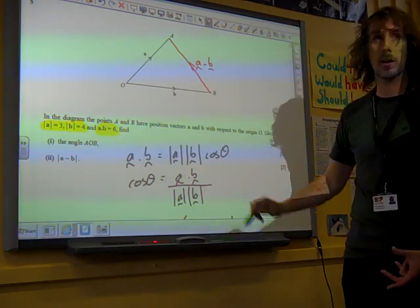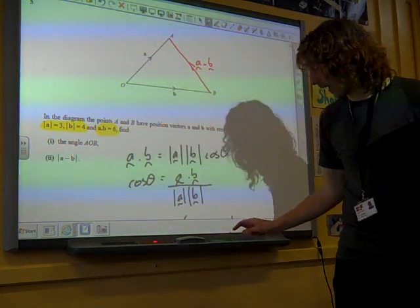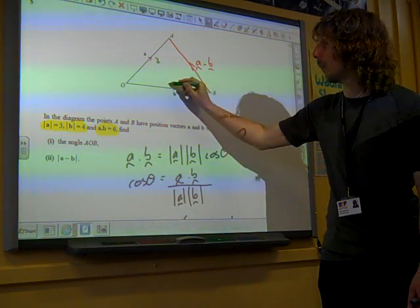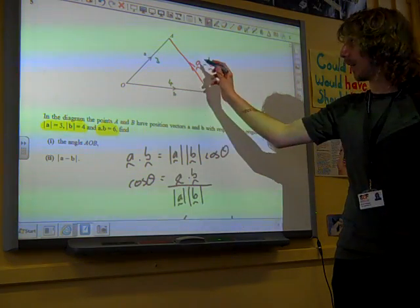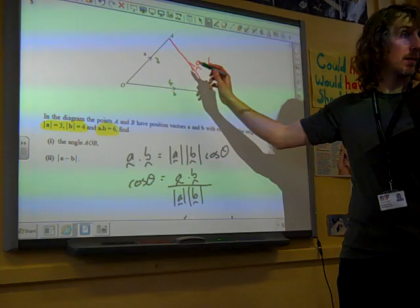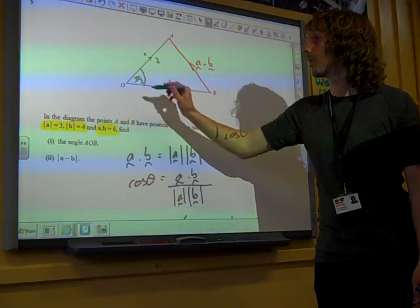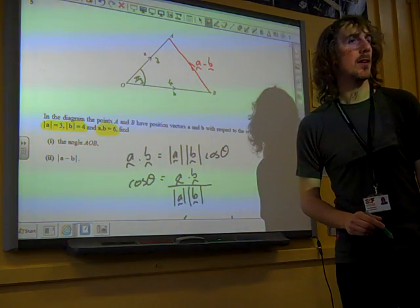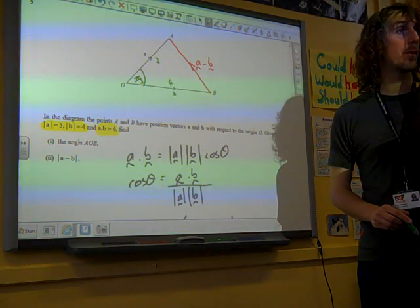It doesn't matter which way we mark it, because actually we're interested in the length of this. We know that the length of this side is 3, the length of this side is 4. We need to find the length of that side, and we also know that that angle is pi by 3. It's all about the diagram, isn't it?